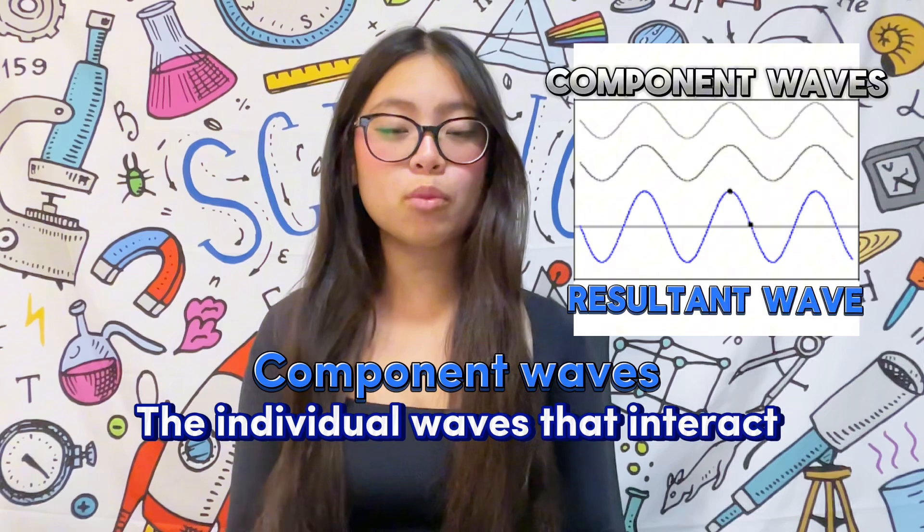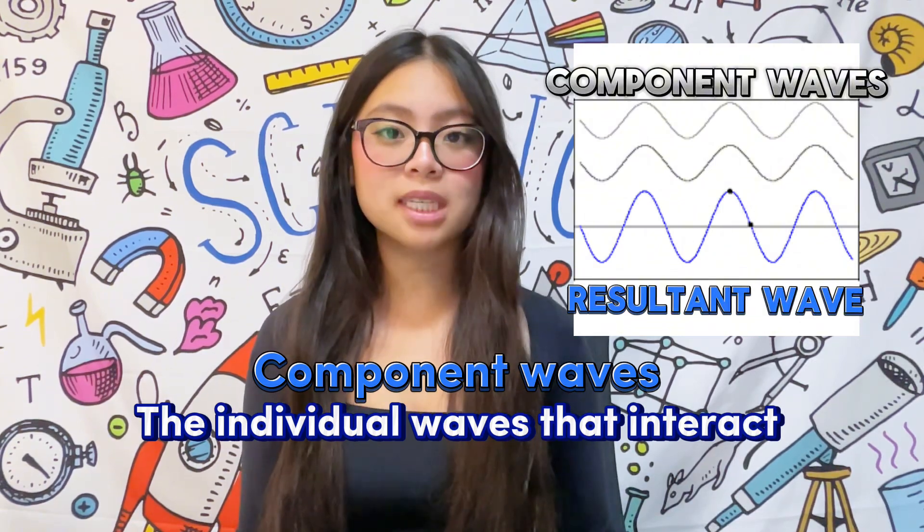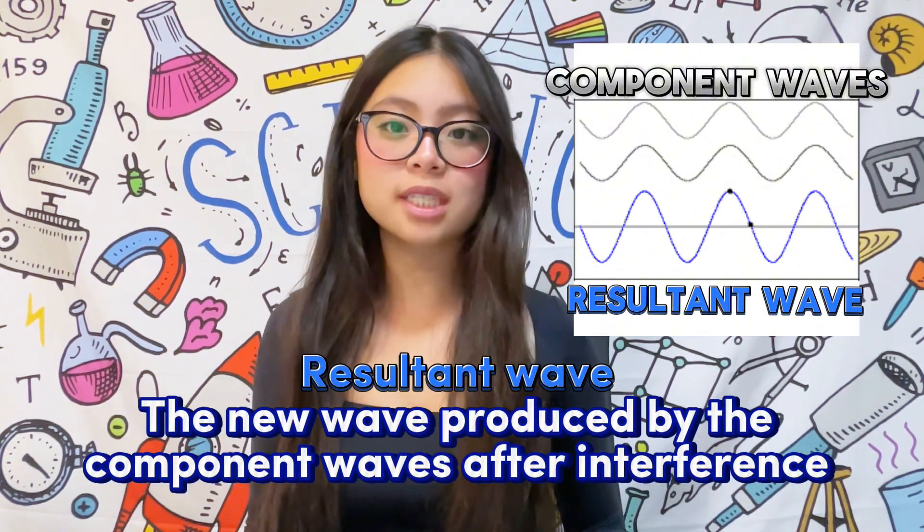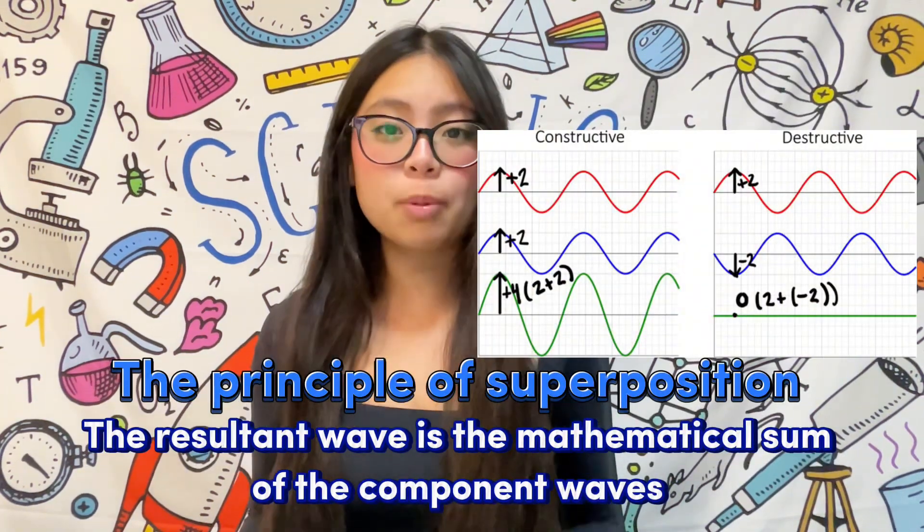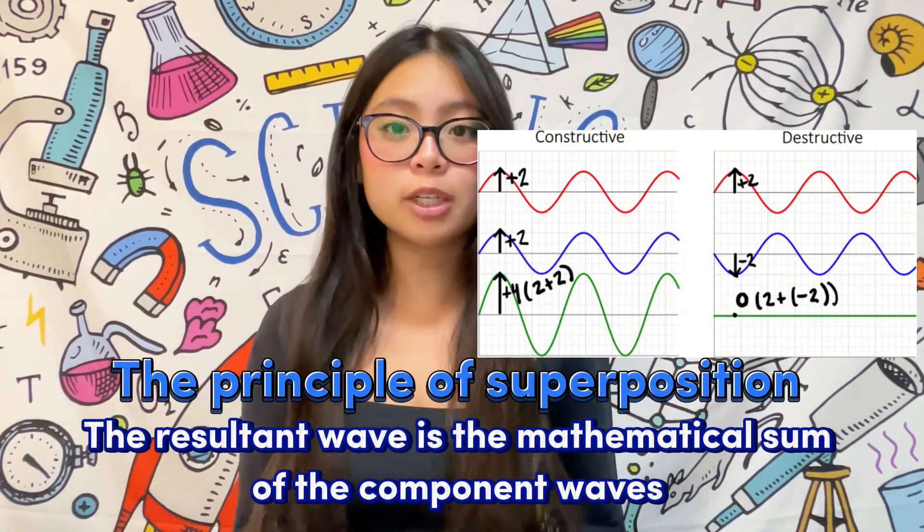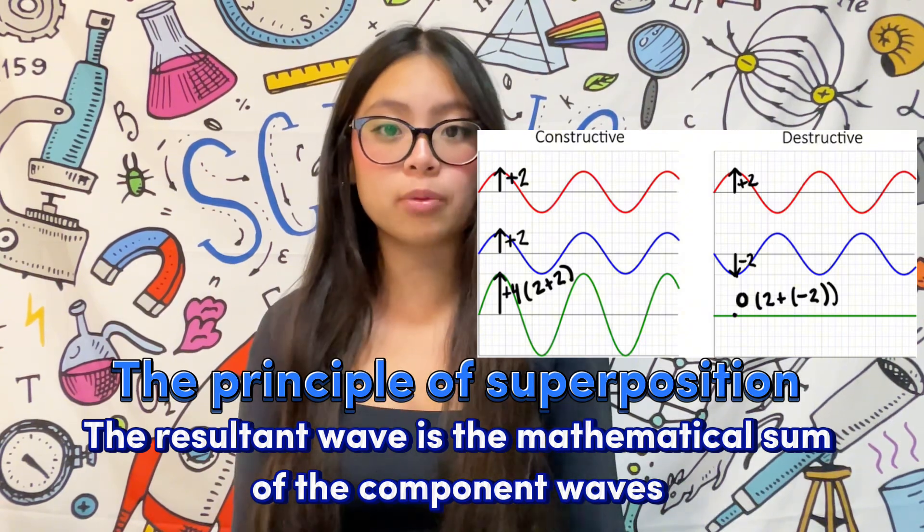The individual waves that interact are called the component waves, and the wave that they produce is known as the resultant wave. The principle of superposition states that the resultant wave is the mathematical sum of the component waves.